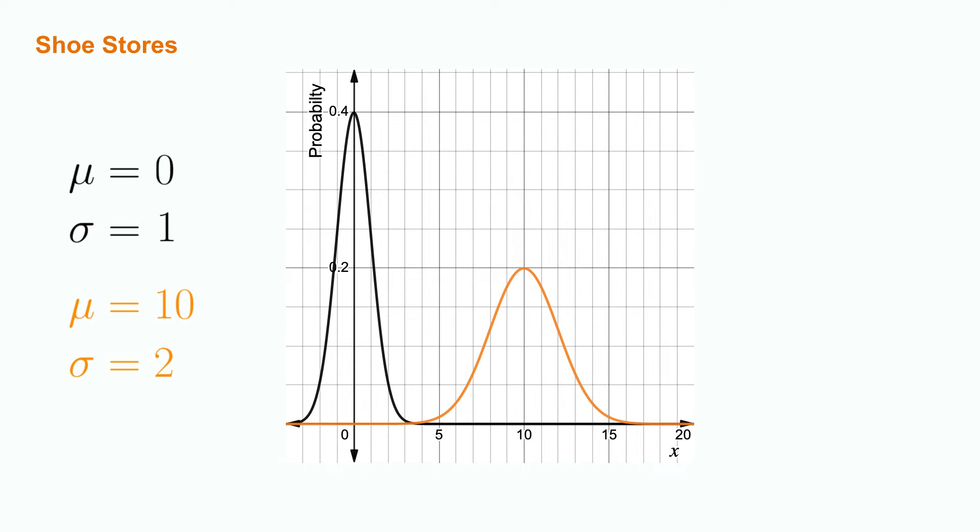In general, the shape of the normal curve will always be the same, but its center will be impacted by its mean value of mu, while its width and height will be determined by the standard deviation sigma. For example, the standard normal is pictured above in black, with a mean of zero and a standard deviation of one, while the shoe size distribution is pictured in orange, with its mean of ten and a standard deviation of two. Notice how the peaks occur at zero and ten respectively, while the orange curve appears wider than the black curve.